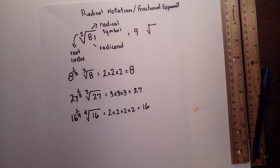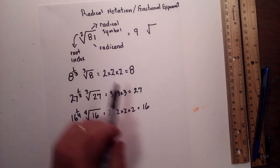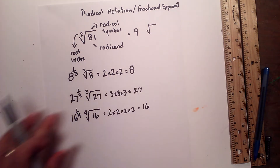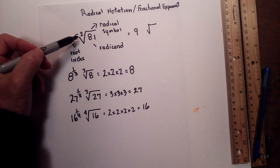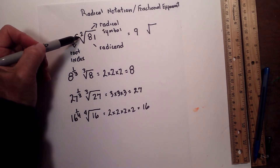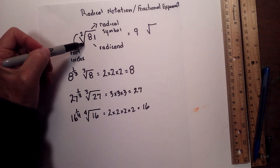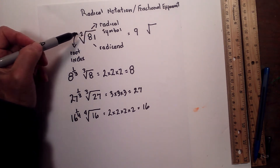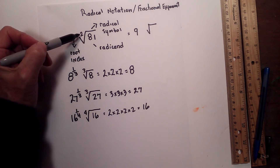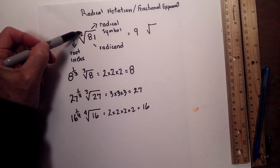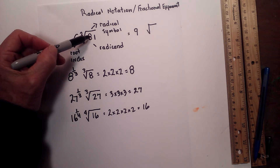In this video I'd like to talk about radical notation and fractional exponents. We know that this is a radical symbol, this is the radicand, and this is the root index. It says what number multiplied by itself equals the radicand.